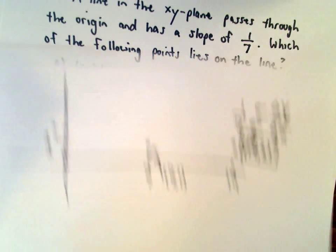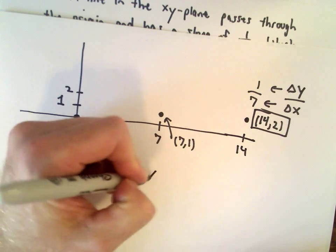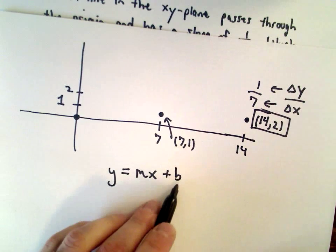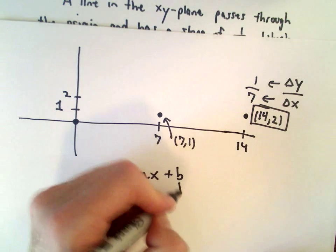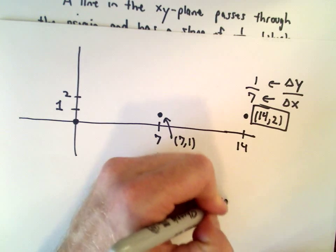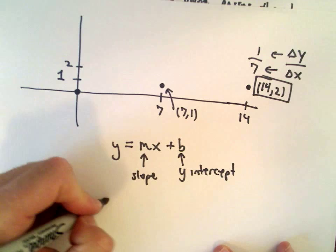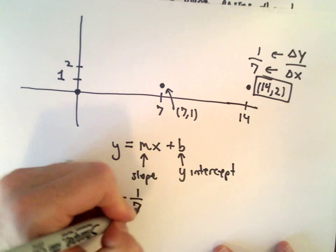Also remember that the equation of a line we can use y = mx + b, where b represents the y-intercept and m is the slope. So we could write the equation of our line as y = (1/7)x + 0, or y = (1/7)x.